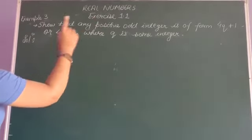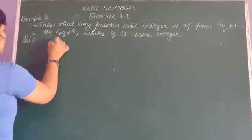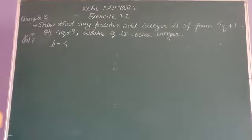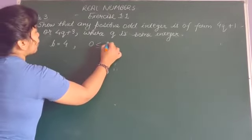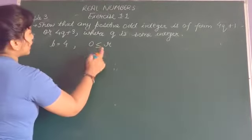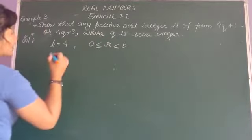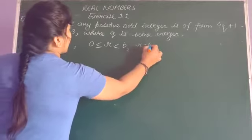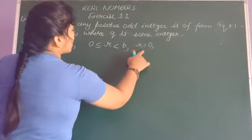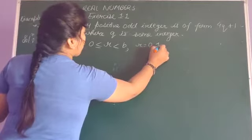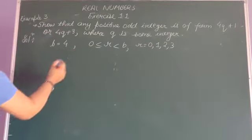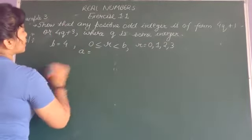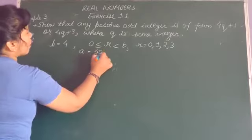The number which is with Q, we will take it as B. So here, B की value क्या हो गई? 4. As we know that the value of R is either equal to or greater than 0 and smaller than the value of B. So here R has how many values? R can be 0, 1, 2, and 3 — so we have 4 values for R. It means that A can be represented as 4Q plus R.